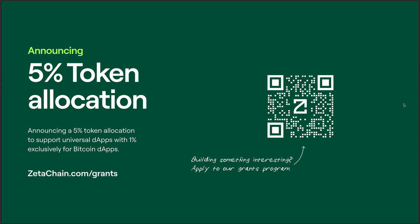Every one of our observer signers is required to run validators of every single connected chain. There's an incentive model where we can slash observer signers if they're not performing properly or if there's a delay on observed transactions from the custody addresses. Every time a user deposits native Bitcoin into that custody address, all the observer signers pick up that transaction and vote to create that ZRC-20 equivalent.